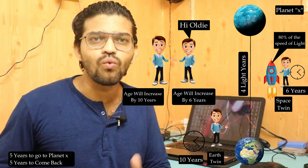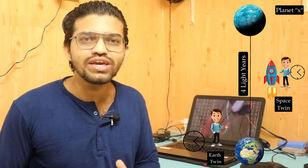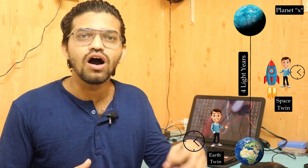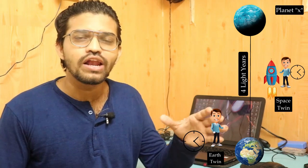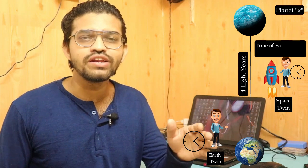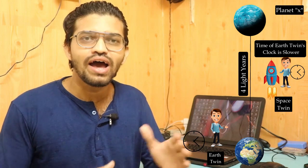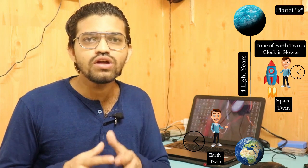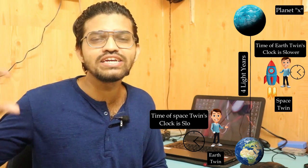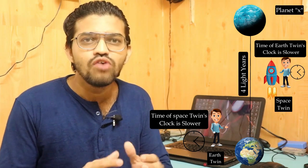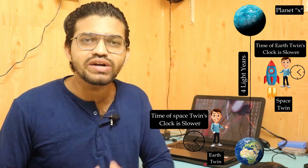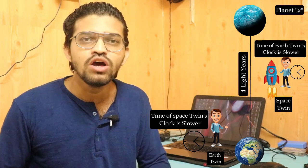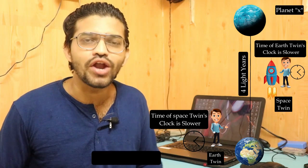For the space twin, while moving into space, he will feel that his spaceship is at rest and the Earth is in motion. Due to this, he can say that time for the Earth twin remains slow. On the other hand, the Earth twin will experience that his own body is at rest and the space twin's spaceship is moving into space, so he will observe that time for the space twin is getting slower. So both brothers will observe the same scenario — both will think that their respective watches and time are getting slow. This is where the paradox occurs, and it can be called the twin paradox.